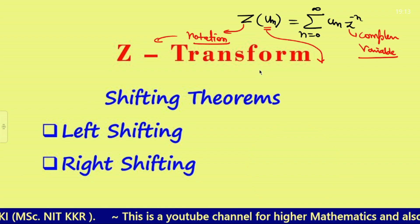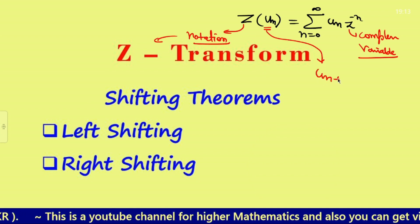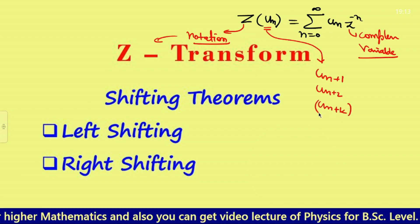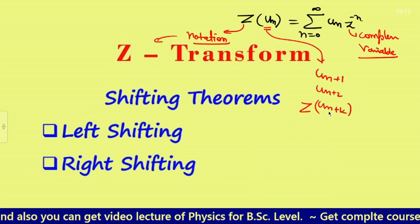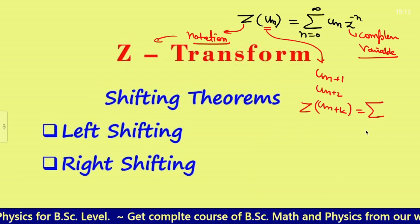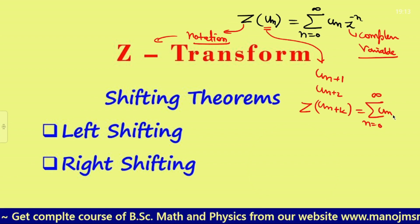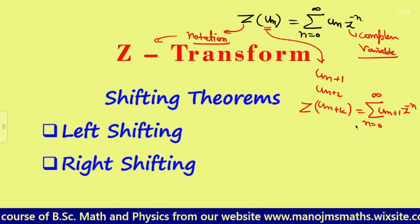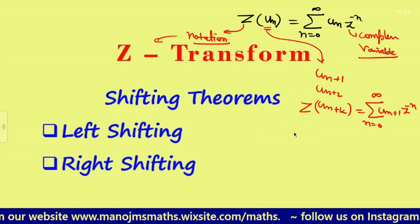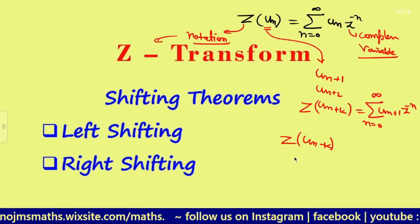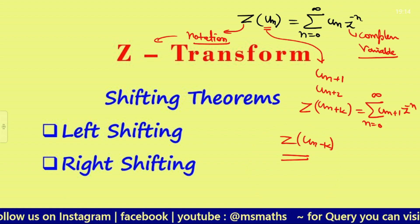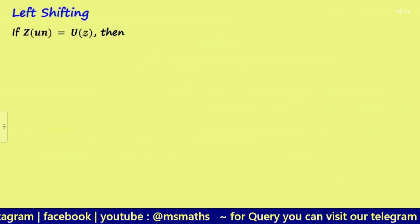If I want to calculate the Z transform of u(n+1), u(n+2), or generally u(n+k), we call this left shifting. And if we want to calculate the Z transform of u(n−k), that is called right shifting. So now let's start with the left shifting theorem.